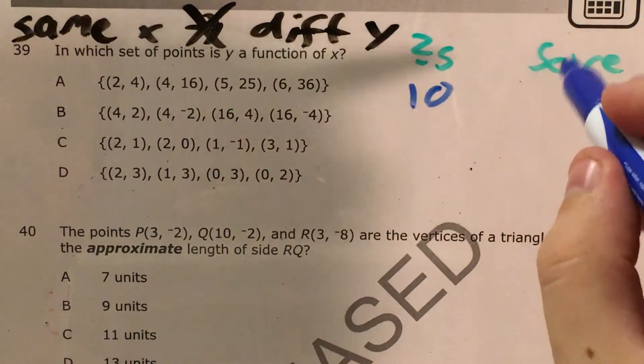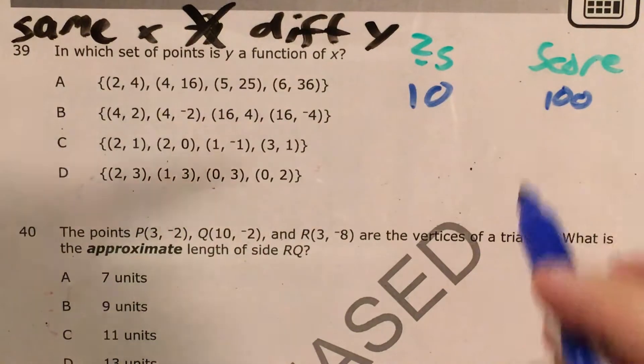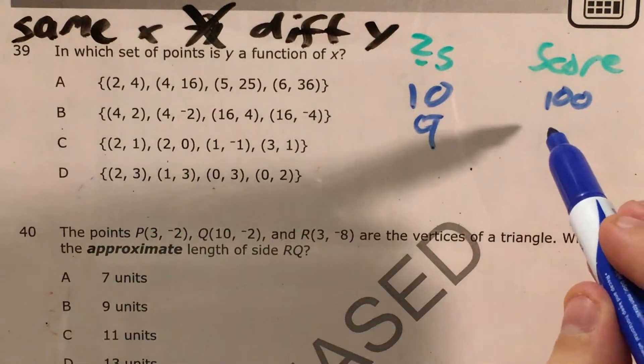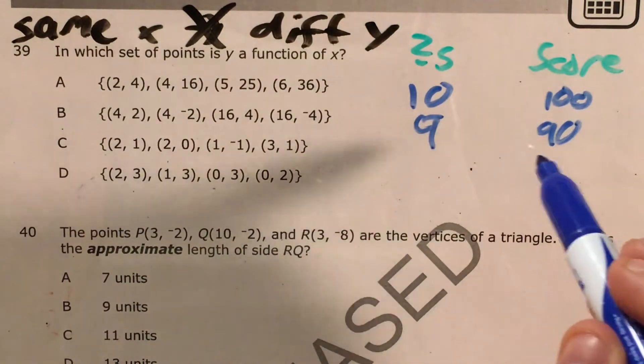If you take a test, you get 10 questions, right, and you get a 100. You're very happy. I'm assuming your friend takes a test. They get nine questions and they get a 90. They're okay with that.